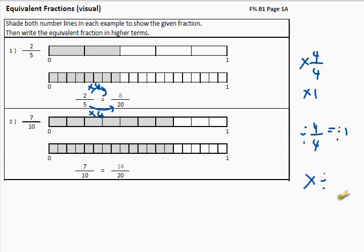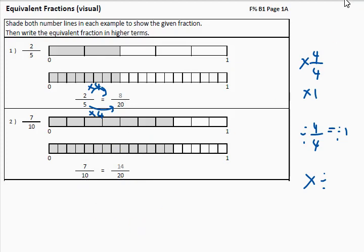So, if we say two times four, we do get eight — so that method works. Let's look at this one: ten times two is twenty, seven times two is fourteen. So that method works. Let's move on to the next worksheet.